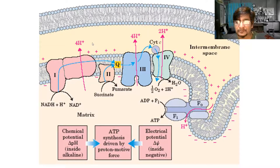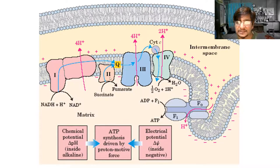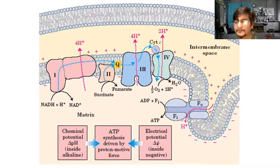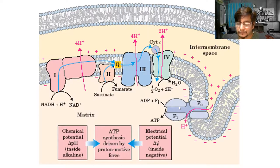You can see the cristae in the diagram, with complexes I, II, III, and IV. As electrons move from one complex to another, energy is released progressively. This proton pumping creates three things: a charge difference between matrix and intermembrane space, a proton motive force as protons accumulate and want to return to the matrix, and an electrical gradient. The only place protons can return is through ATP synthase, which is Complex V.